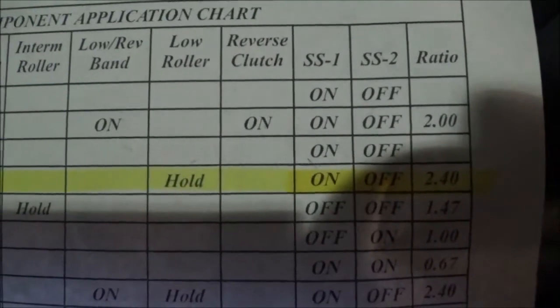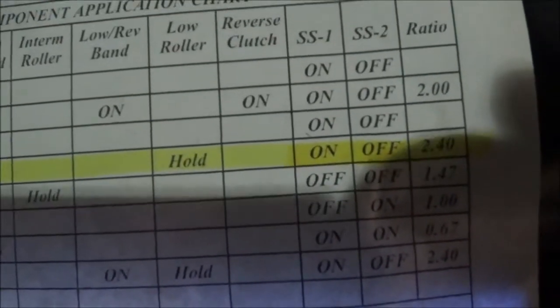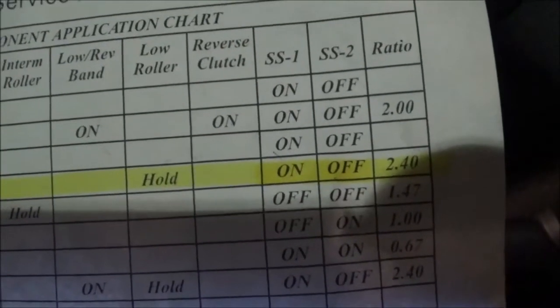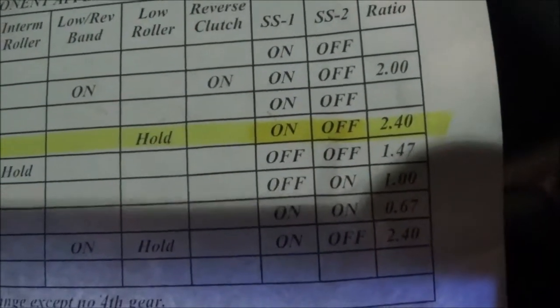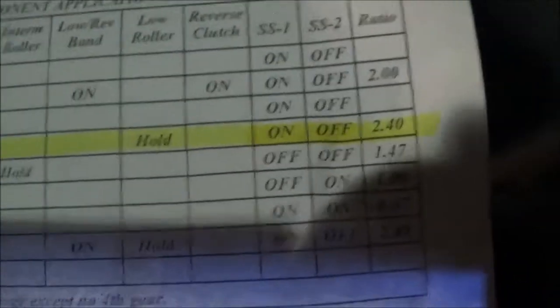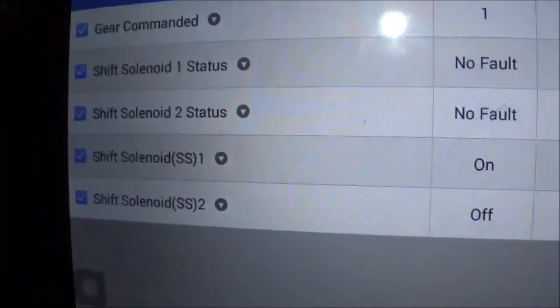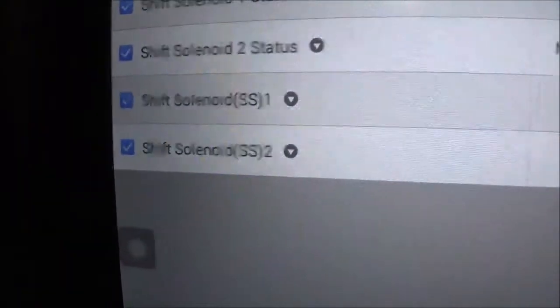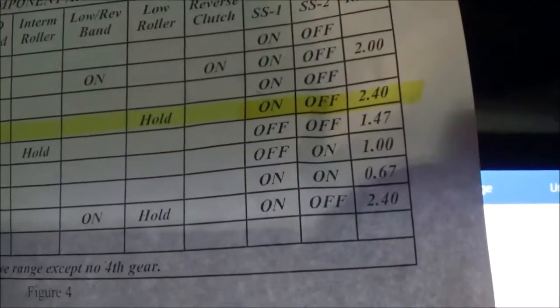Shift solenoid 1 is on in park, reverse, neutral, and drive. I have the ignition on and on the scanner it shows shift solenoid 1 is on and shift solenoid 2 is off — so far it agrees with the paper. I'm not sure if these are normally open or normally closed.